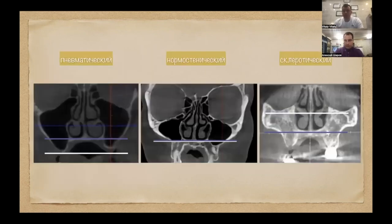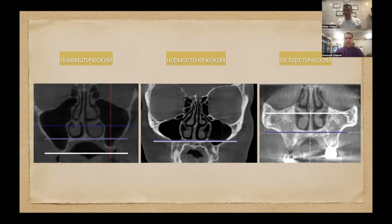Следующий момент — пневматический, нормостенический, склеротический тип пазух. Пневматический тип мы встречаем у долихоцефалов — у них кости лёгкие, и как следствие более выраженная пневматизация пазух. Пневматический тип: дно пазухи ниже дна носа. Это коррелирует с тонким биотипом и выраженной кортикальной стенкой — вот эта триада.